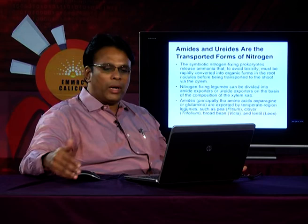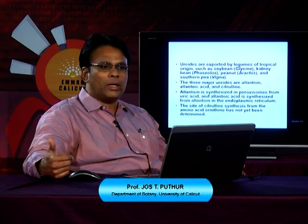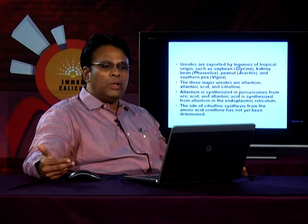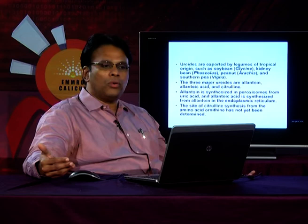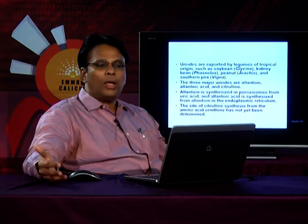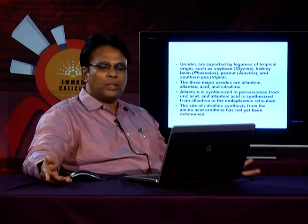Urides are generally exported by legumes of tropical origin, such as soybean, kidney bean (Phaseolus), peanut (Arachis), and southern pea (Vigna). In all these tropical legumes, nitrogen is generally transported in the form of urides. The three major urides are allantoin, allantoic acid, and citrulline. To summarize: the two major amides are glutamine and asparagine, and the three major urides are allantoin, allantoic acid, and citrulline.